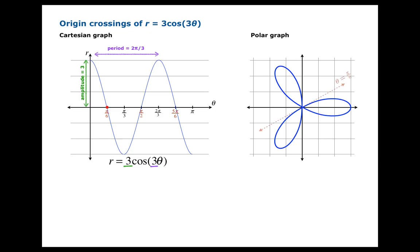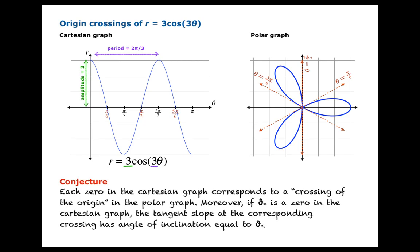that every time there's a zero in the graph on the left, you get an origin crossing. Moreover, the angle of inclination as you pass through the origin appears to be equal to the argument that gave you the zero in the first place. We're going to prove this conjecture in the slides that remain.